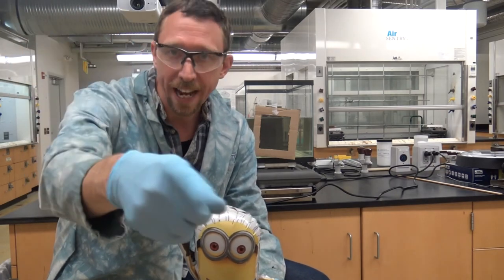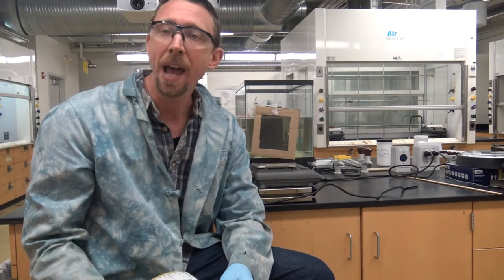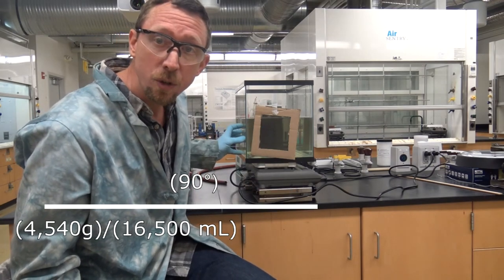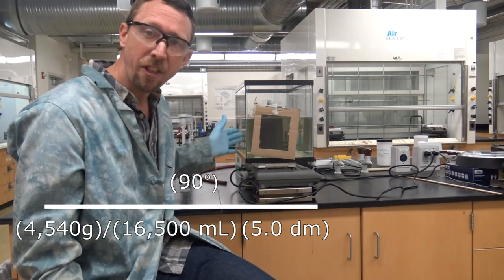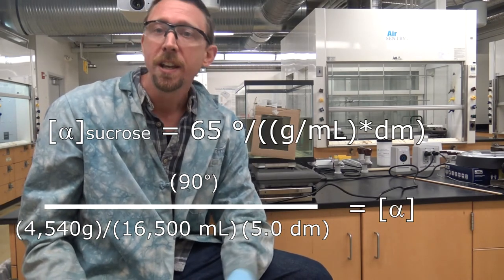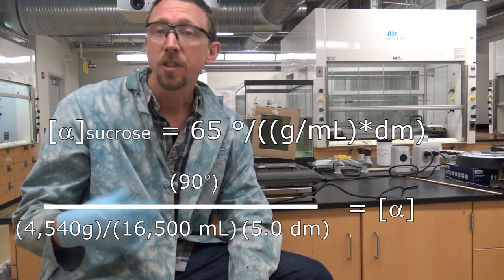But when we placed a chiral solution in here by adding sucrose to the mixture we discovered that that plane of polarization actually changes as the light traverses the tank and therefore we had to rotate our second polarizer by a certain amount in order to see our image, see the light that was originating from our source. Now using that angle of rotation, the concentration of the sucrose in the solution here and the path length of the tank that it had to traverse, we can calculate something called the specific rotation of sucrose.